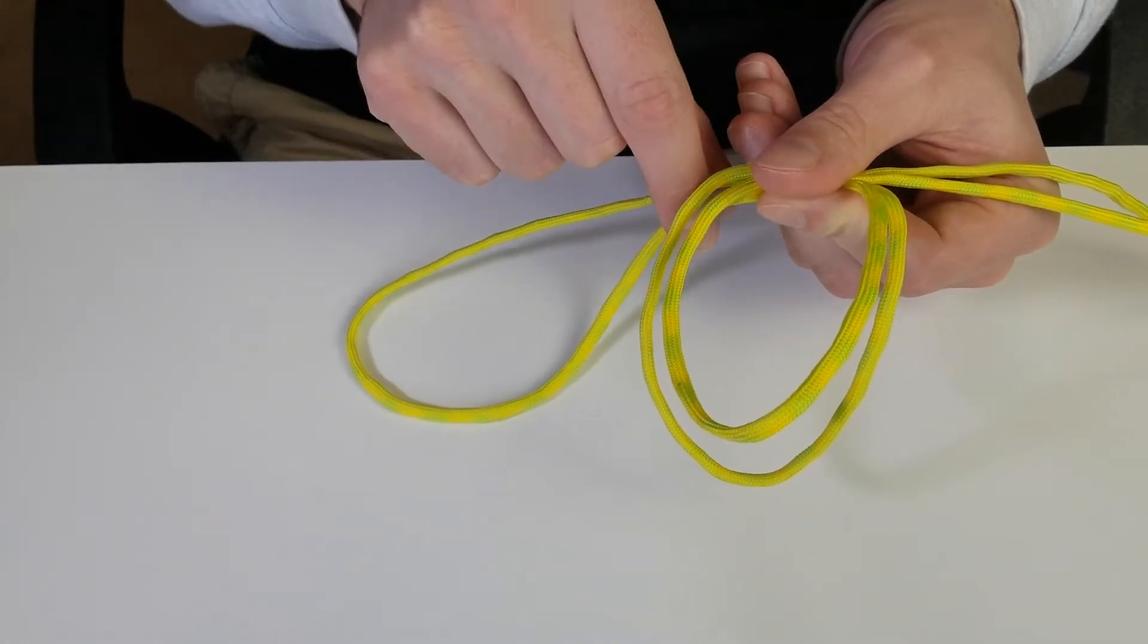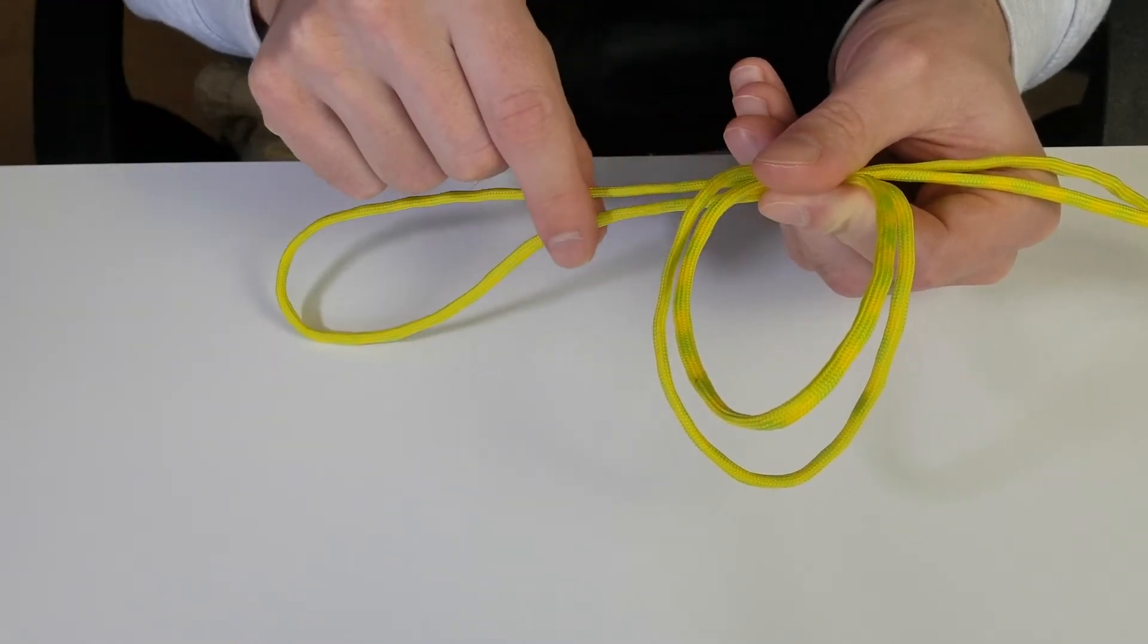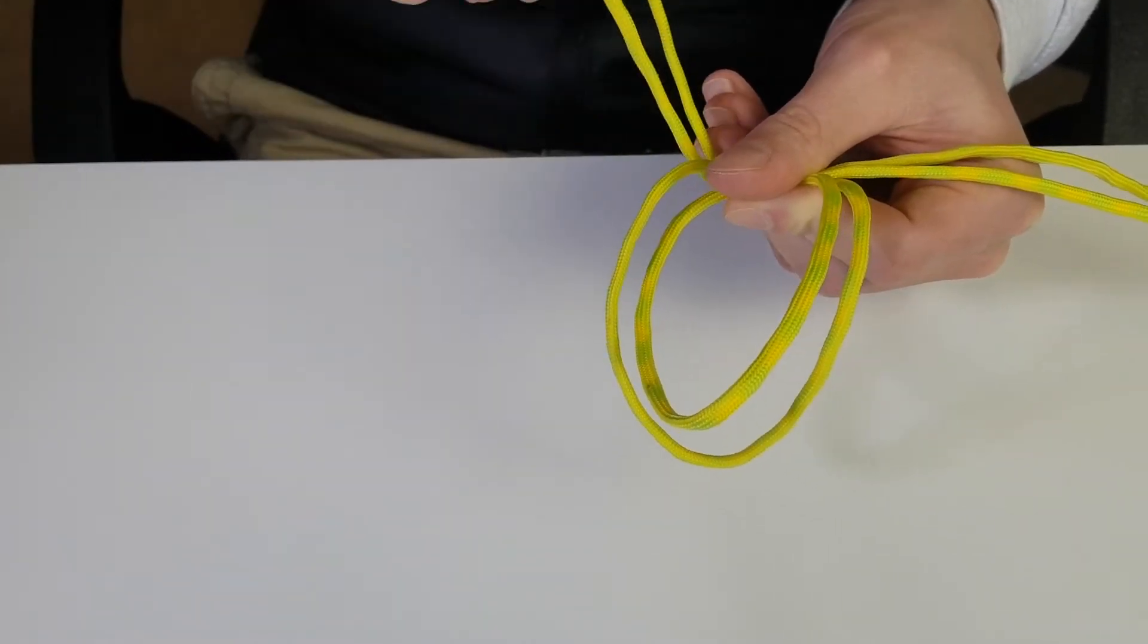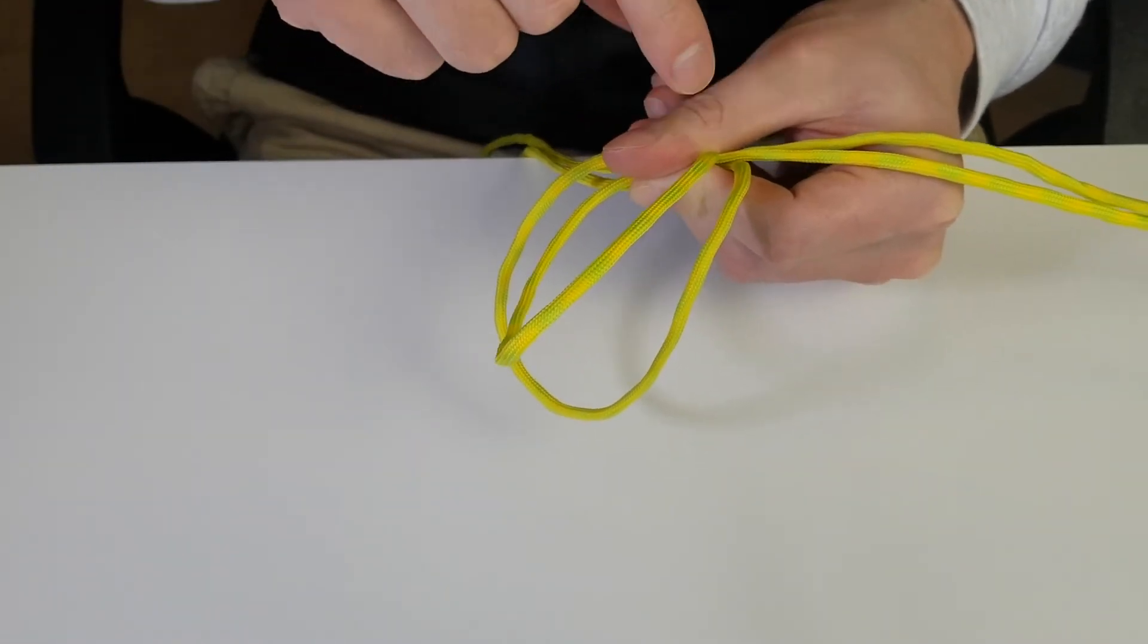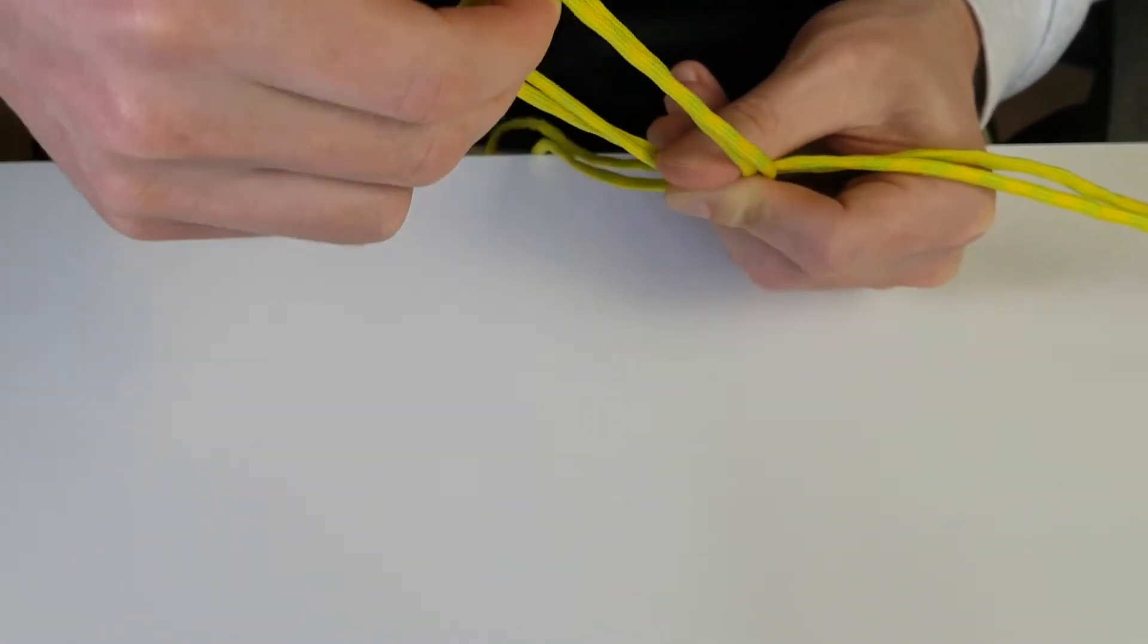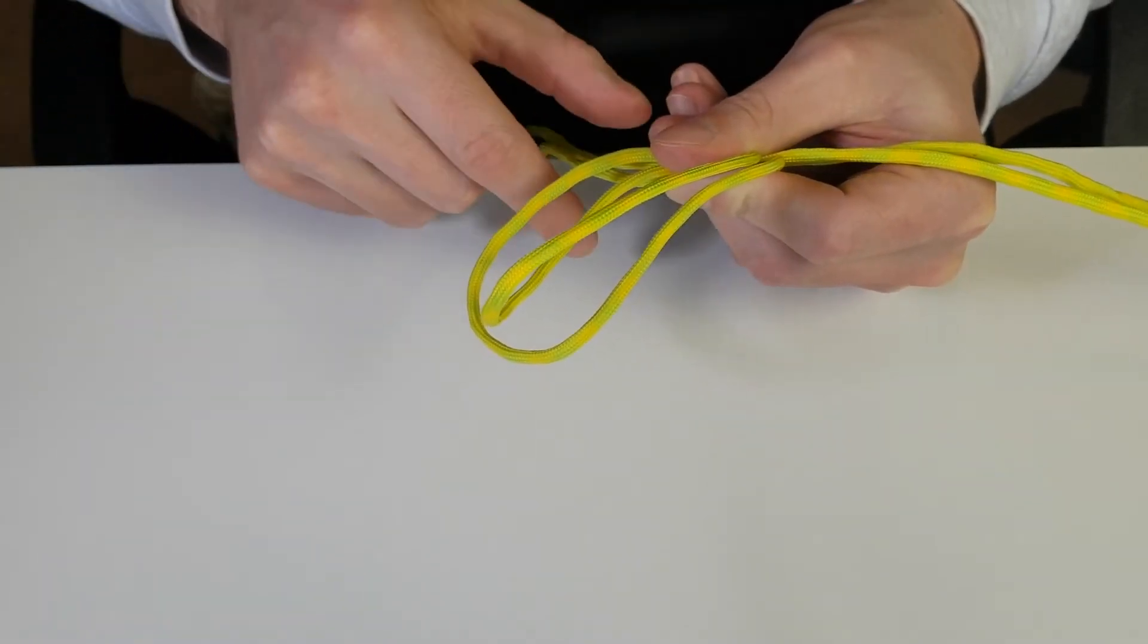What you're then going to do is grab this loop here, so this is the very first loop we made, and we're going to take it and wrap it around our thumb and also around these two loops here. So it's going to go around two loops, around my thumb.